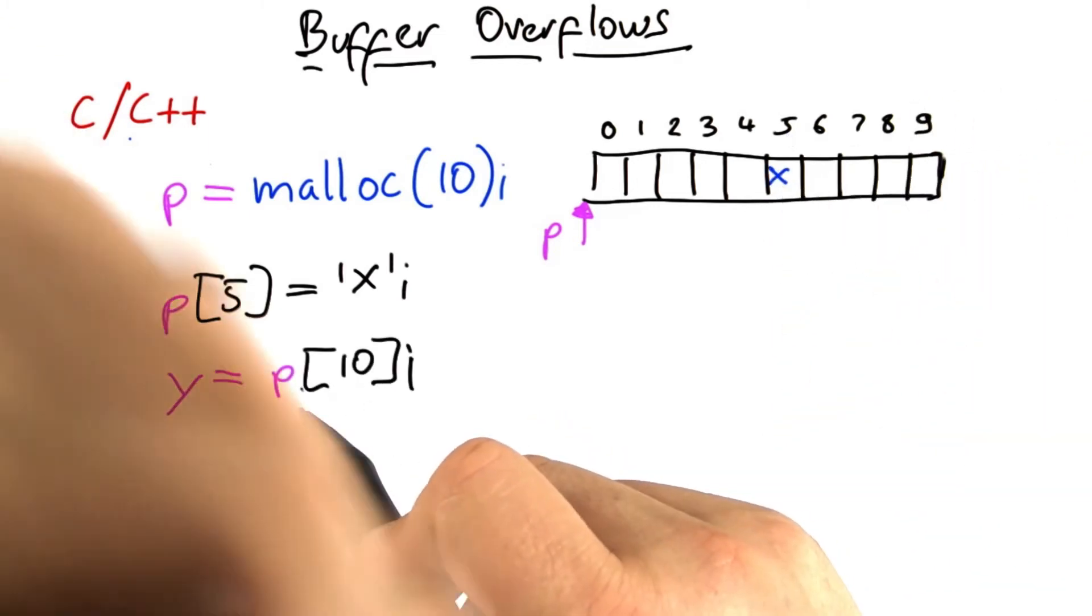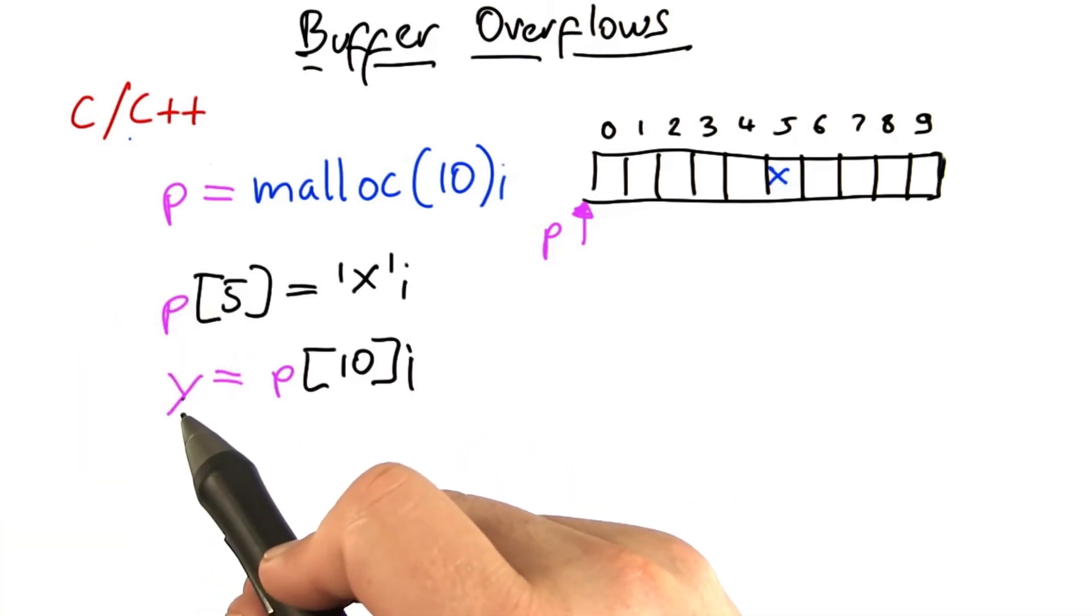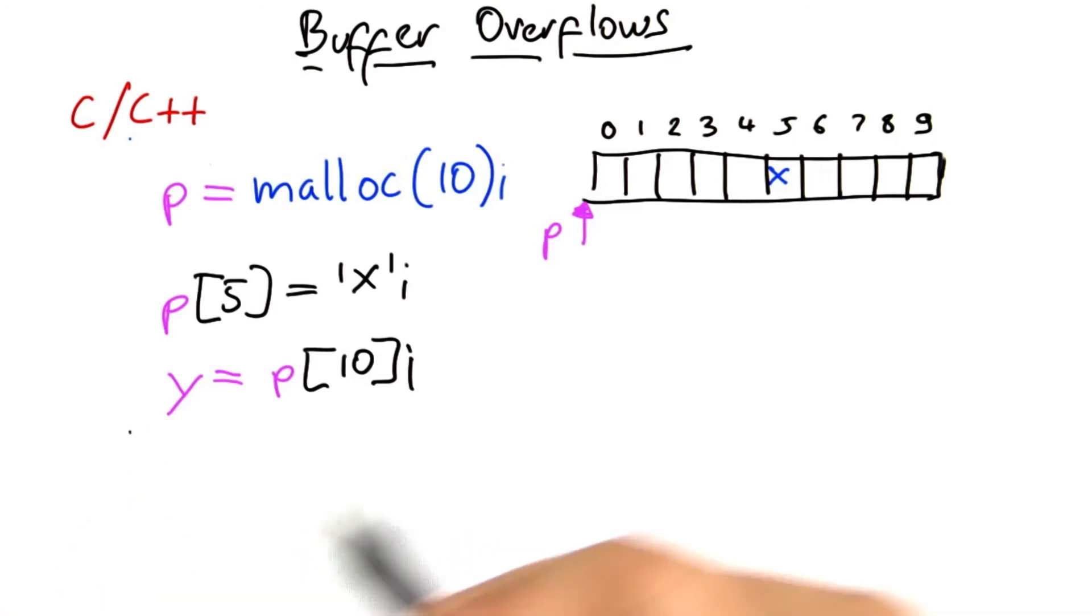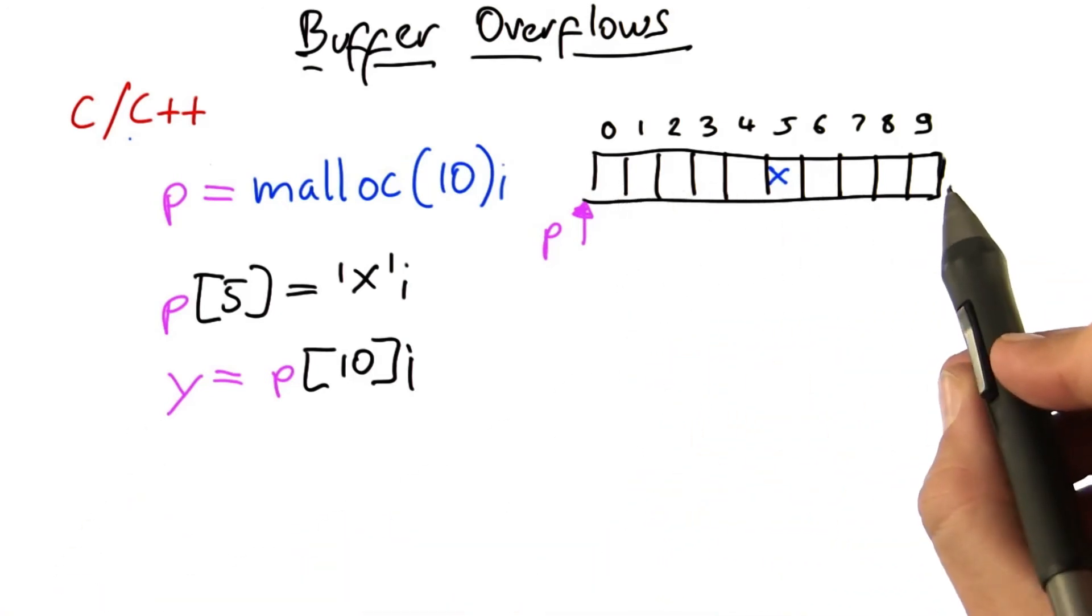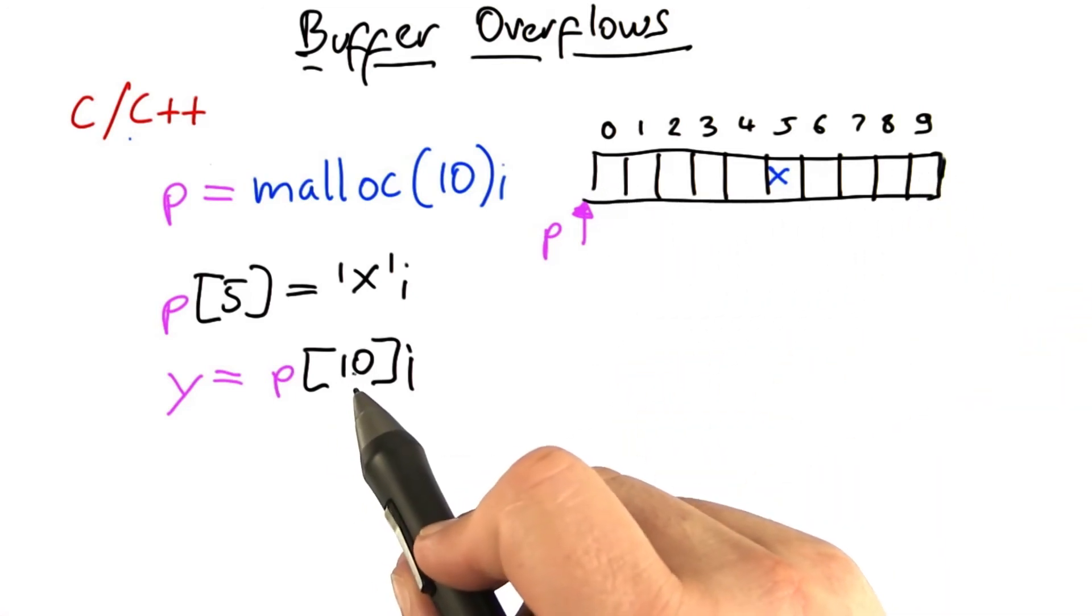We can also read elements from the array. For instance, we can access the 10th element of the array and store the resulting character in y. The only problem is there is no 10th character. The array has only 10 elements, and this would be the 11th element.